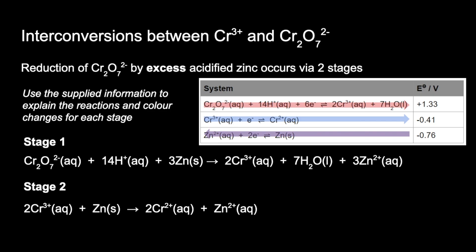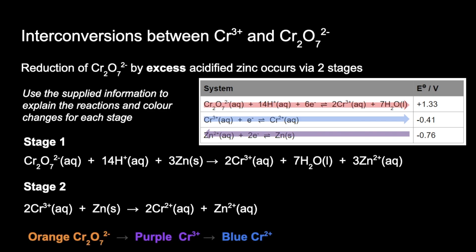The coloured substances are the dichromate 6 ion, the chromium 3+ ion, and the chromium 2+ ion. The colour changes are orange to purple to blue.